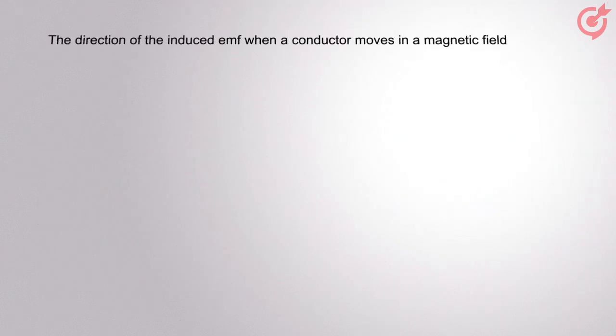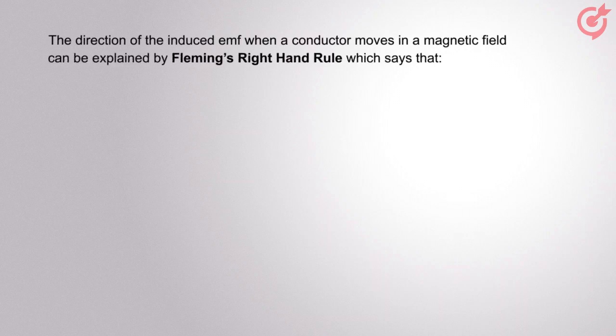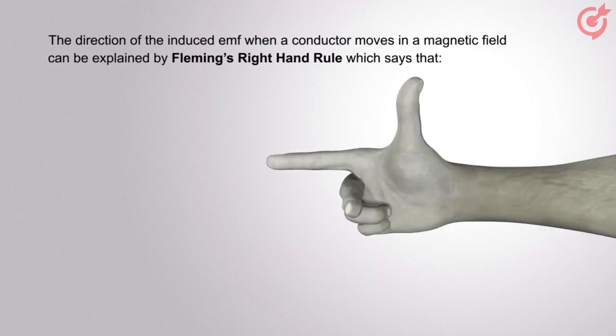The direction of the induced EMF when a conductor moves in a magnetic field can be explained by Fleming's right hand rule, which says that hold out the right hand with the first finger, second finger, and the thumb at right angles to each other.